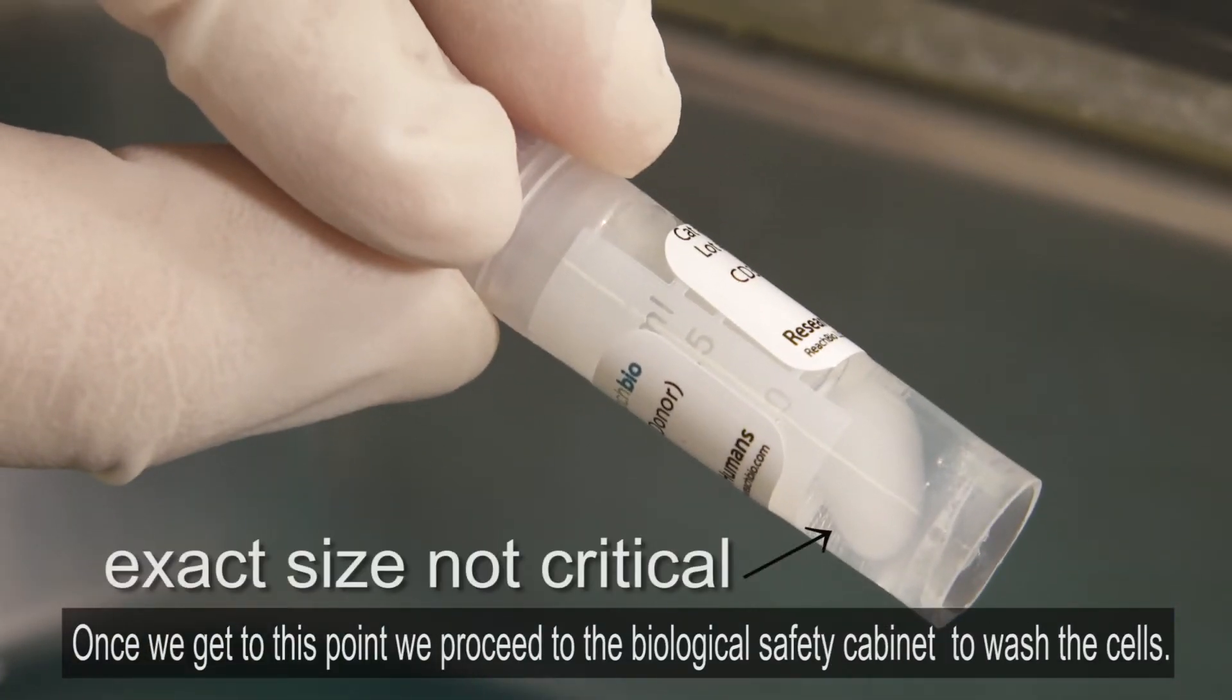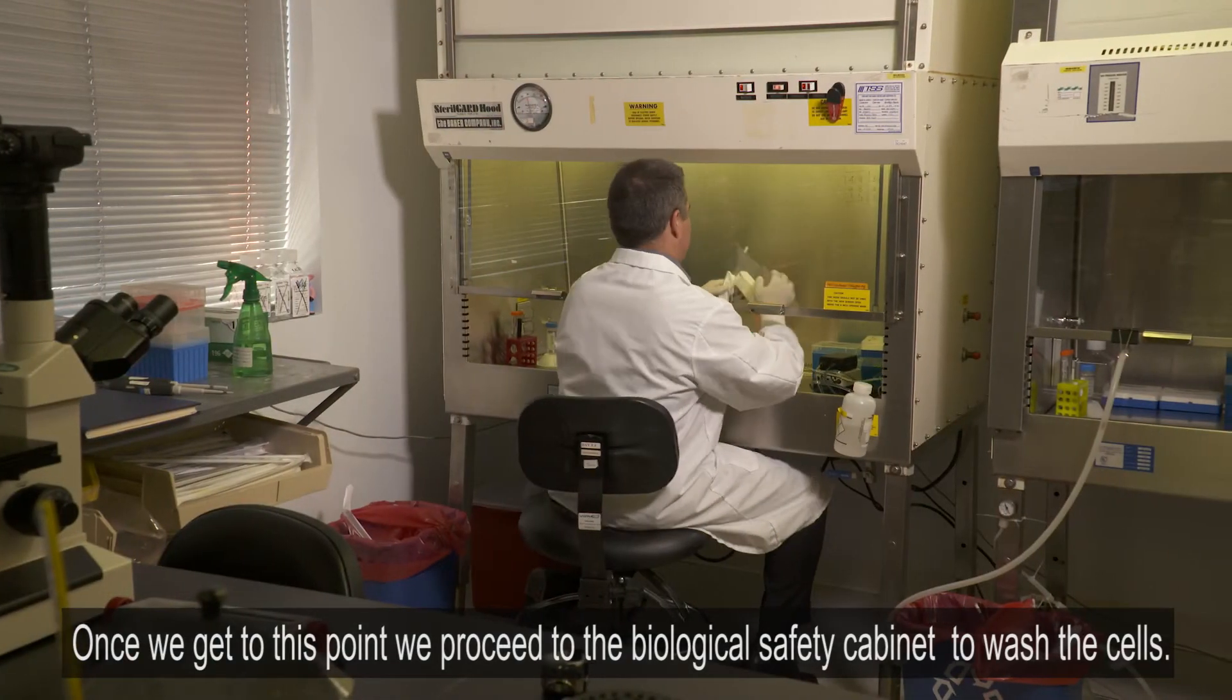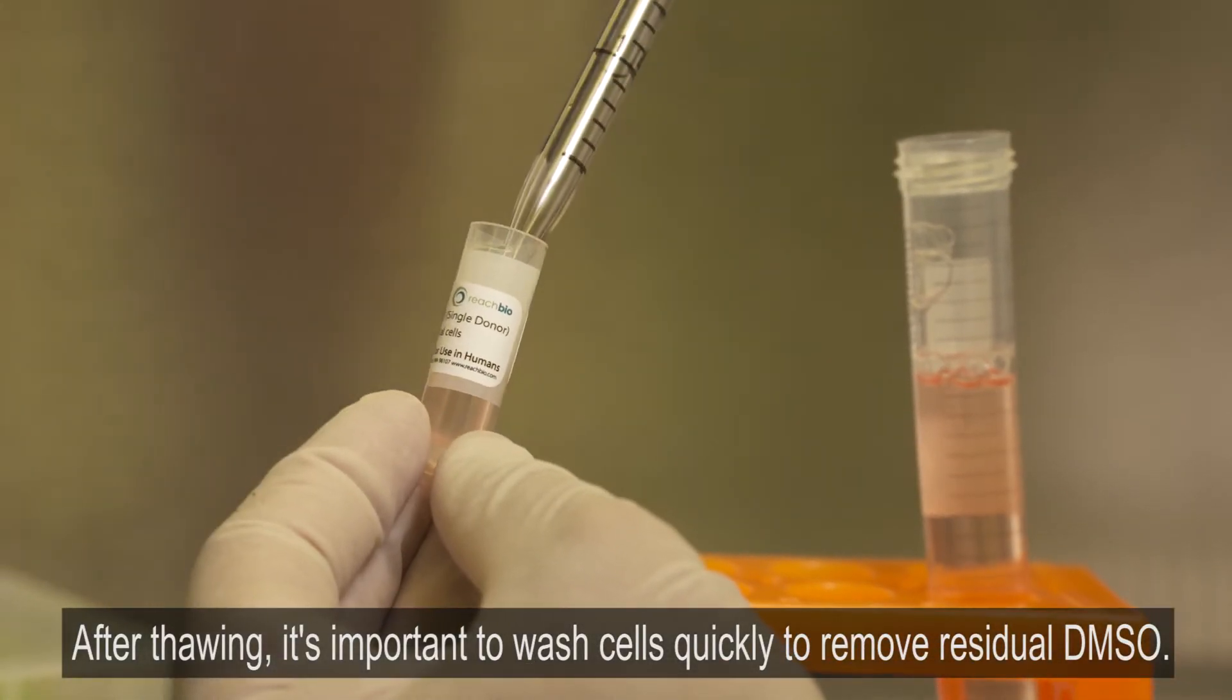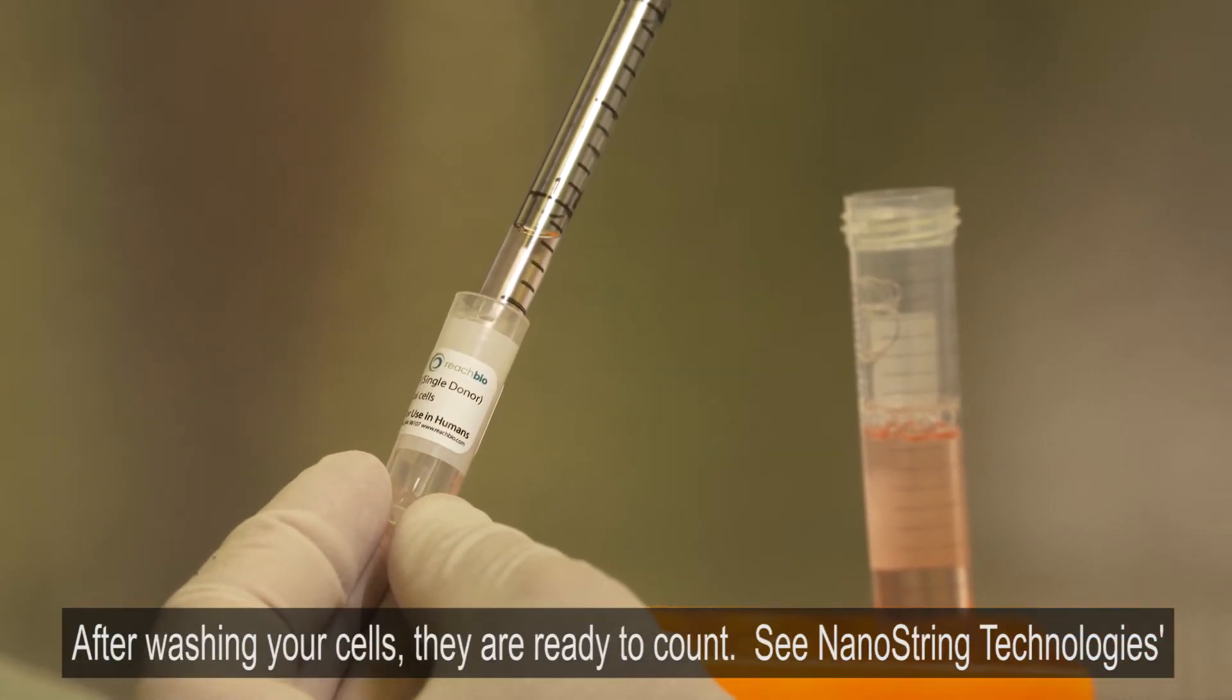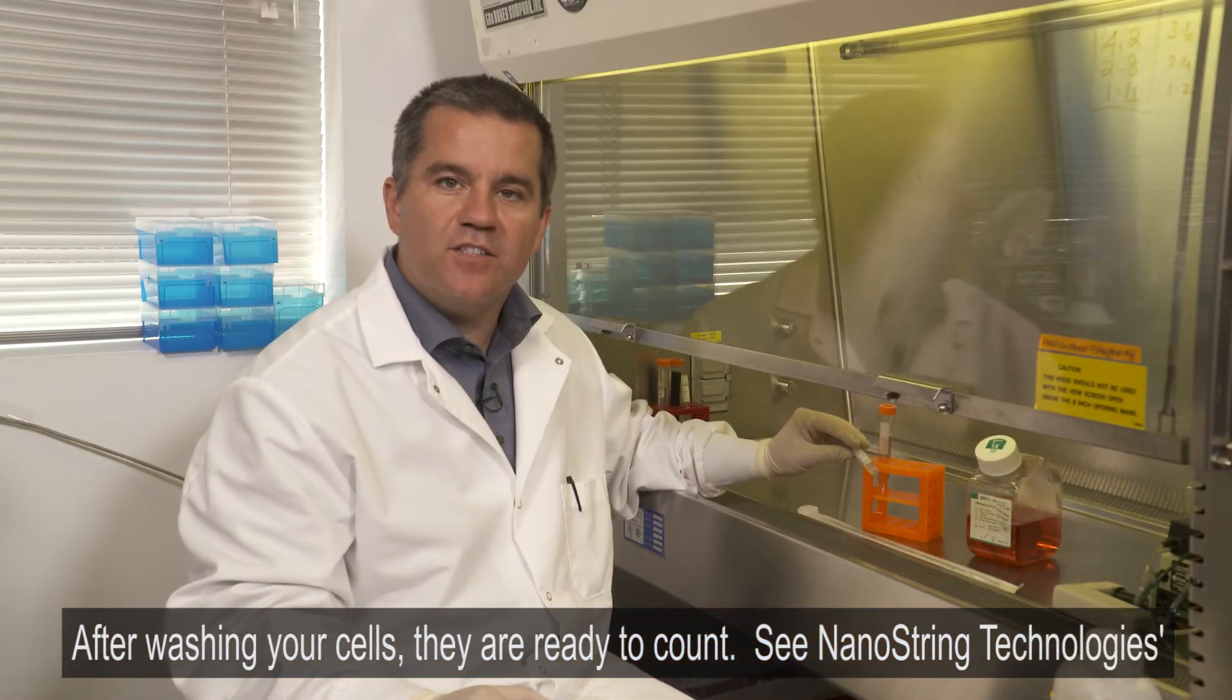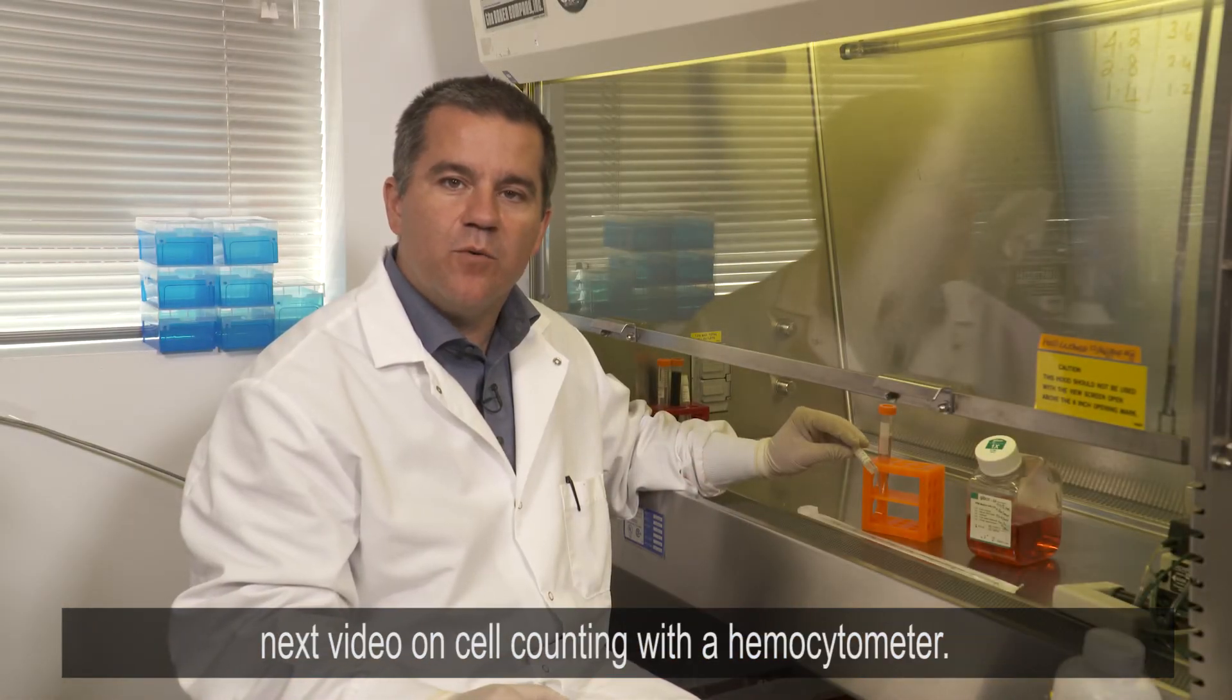Once we get to this point, we proceed to the biological safety cabinet to wash the cells. After thawing, it's important to wash cells quickly to remove residual DMSO. After washing your cells, they are ready to count. See NanoString Technologies' next video on cell counting with a hemocytometer.